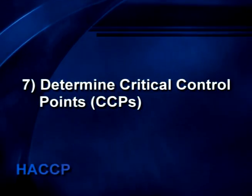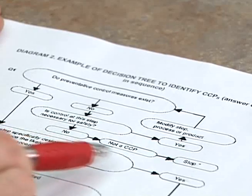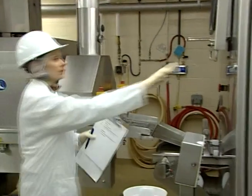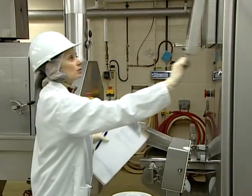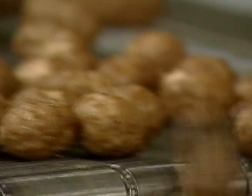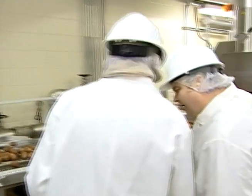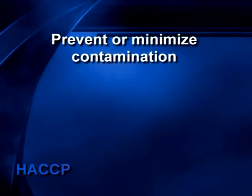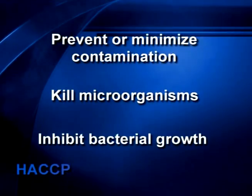The seventh step of HACCP is the determination of critical control points, or CCPs — this is also the second HACCP principle. To identify CCPs, a team approach is best, since there's a considerable amount of discussion and science involved. The HACCP decision tree is an essential tool to help you identify CCPs. CCPs are selected based on a hazard assessment and operational procedures. A critical control point is needed if there's any risk of illness or injury resulting from failure to prevent or minimize contamination, kill microorganisms, or inhibit bacterial growth.